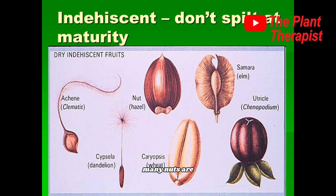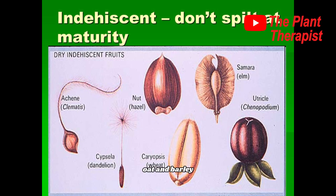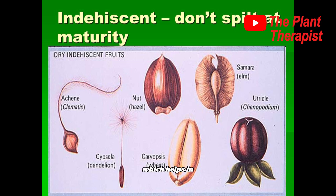Botanically speaking, many so-called nuts are not nuts — for example, peanuts are botanically not a nut but a legume, and walnuts are not botanically nuts but are drupes. Next are grains, also called caryopsis — tightly united with the seed and cannot be separated from it. All members of the grass family including corn, wheat, rice, oat, and barley produce grains, which are indehiscent dry fruits also known as caryopsis. In samaras, the pericarp surrounding the seed extends out in the form of a wing or membrane which helps in dispersal.